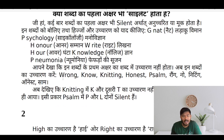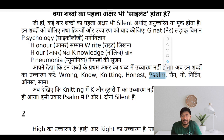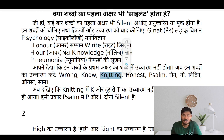So you can practice these words: wrong, no, knitting, honest, sham. In this word, two letters are silent — P and L are silent. In knitting, K is silent and T is also silent, so: knitting.